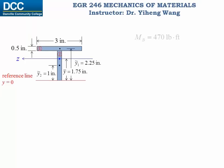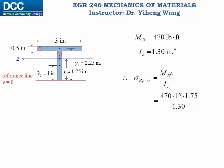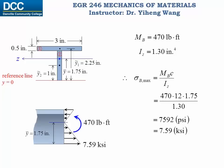Since we have determined the internal bending moment at point B and now have the moment of inertia, we apply the flexure formula to solve for the maximum bending stress at point B. We can also represent the linear distribution of normal stress, where the direction of stress must agree with the direction of the bending moment.